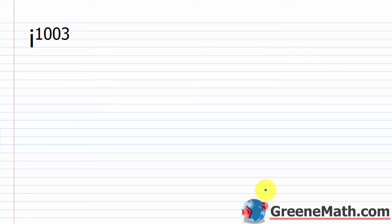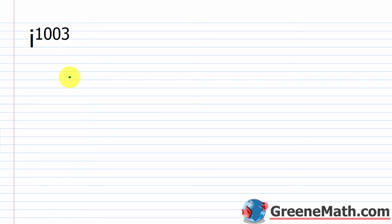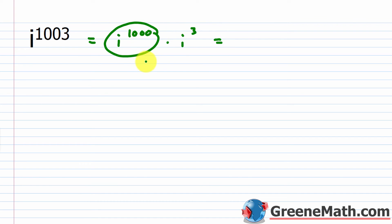What about i raised to the power of 1003? Looking at the final two digits: 03 is not divisible by 4. Going down from 3 to 2, to 1, to 0 — 1000 is divisible by 4. So we write this as i raised to the power of 1000 times i raised to the power of 3. We know the first part is 1, so it's 1 times i cubed, and i cubed by definition is negative i.